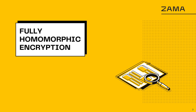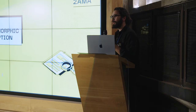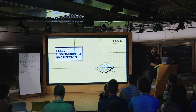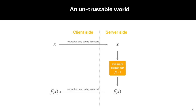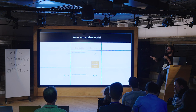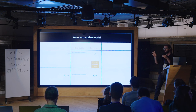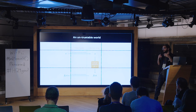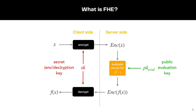A brief reminder of what fully homomorphic encryption is. Taking the example of the World Wide Web: we have a client and a server, the data is encrypted during transport and on the server side, the server does some computation, and the result is returned to the user. The data is always protected during transport — think HTTPS — but the data is actually in the clear on the server side. What FHE allows us to do is keep the data encrypted during the whole process, so even the computation is done on the encrypted data.